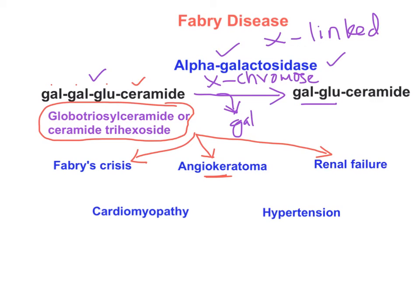Fabry disease patients most commonly die due to renal failure from progressive kidney deterioration. Continuous accumulation of ceramide trihexoside in heart tissues leads to enlargement of the heart, causing cardiomyopathy. Accumulation in blood vessels combined with cardiomyopathy causes hypertension. It is an X-linked condition where males are primarily affected while females are carriers. Accumulation of globotriacylceramide or ceramide trihexoside is the hallmark of Fabry disease.